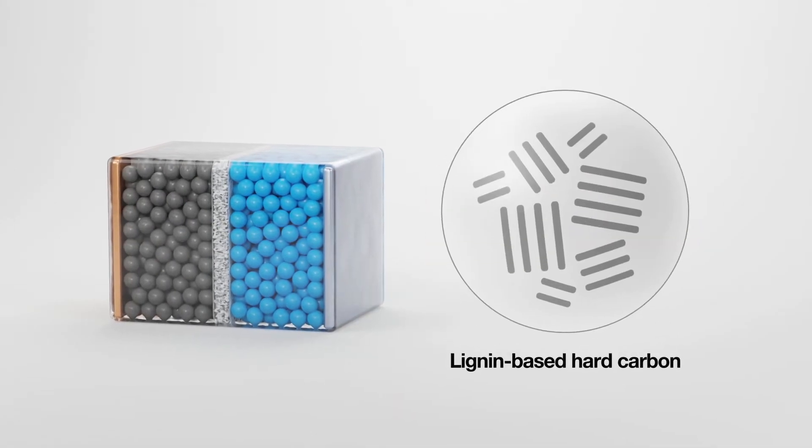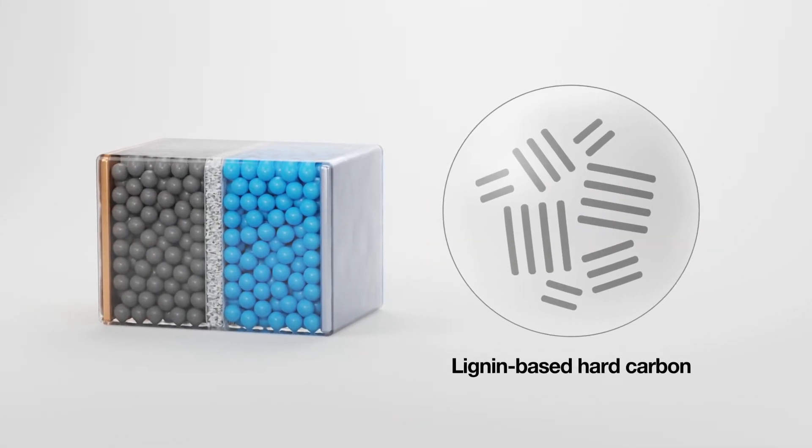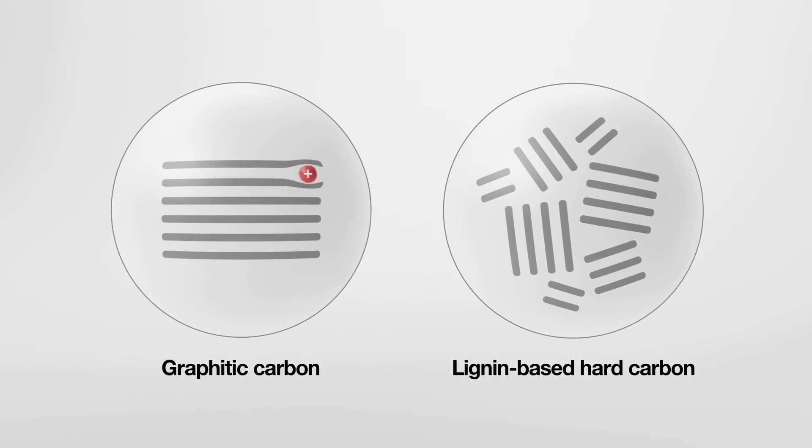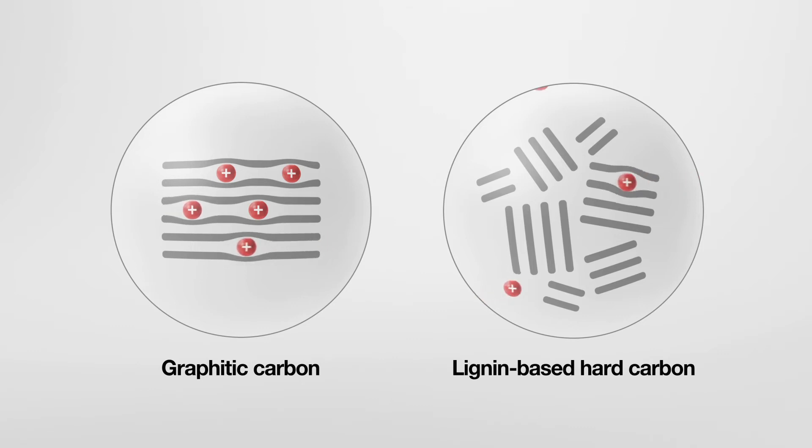Remember what we showed earlier: in graphite, the ions can only enter from the sides where they slowly fill up the material in sequence. On the other hand, with hard carbon, the ions can enter from all directions and move more easily and rapidly.